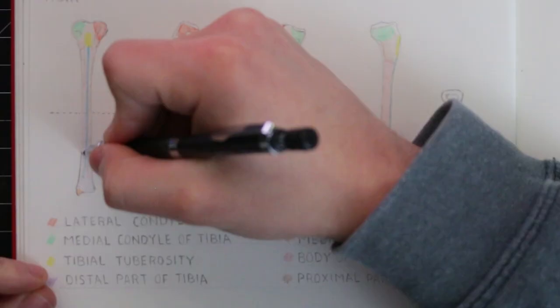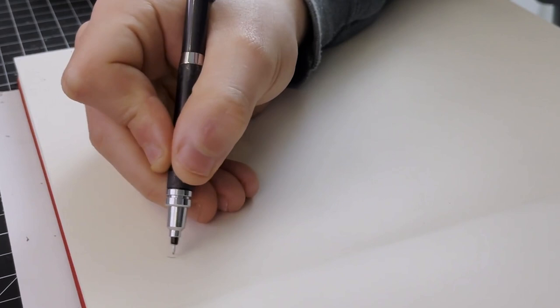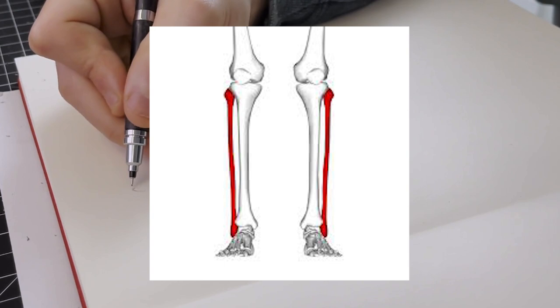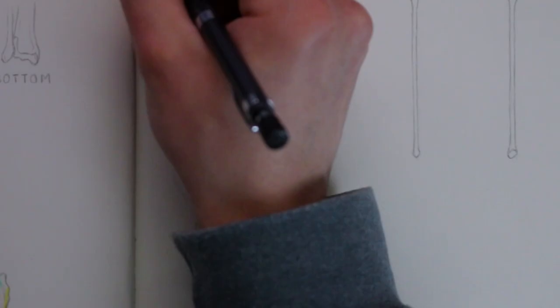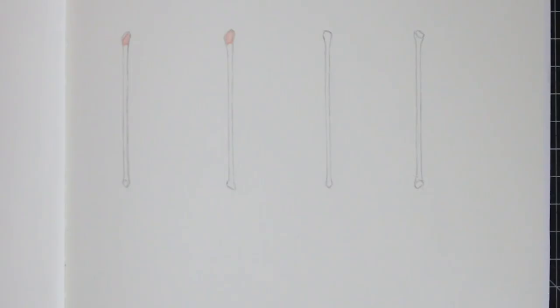So that's the tibia, now let's look at the fibula. Now the fibula is the slimmer bone in the lower leg that depends on the tibia. It helps the tibia support the weight of the body and holds various muscles in place. Here you can see its structure as I sketch this out on different angles again.